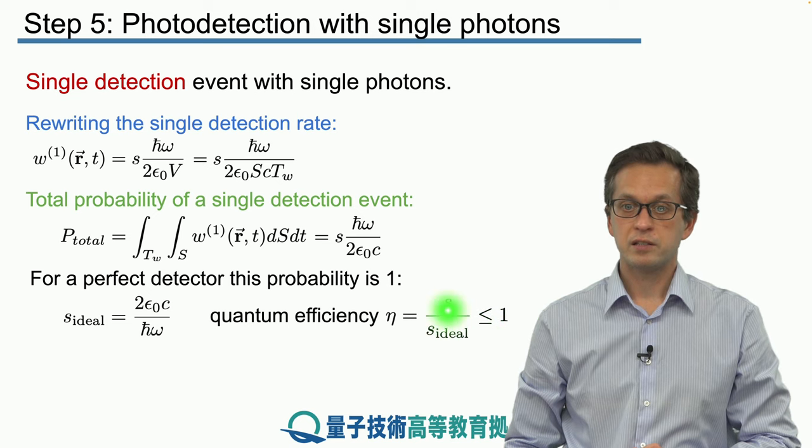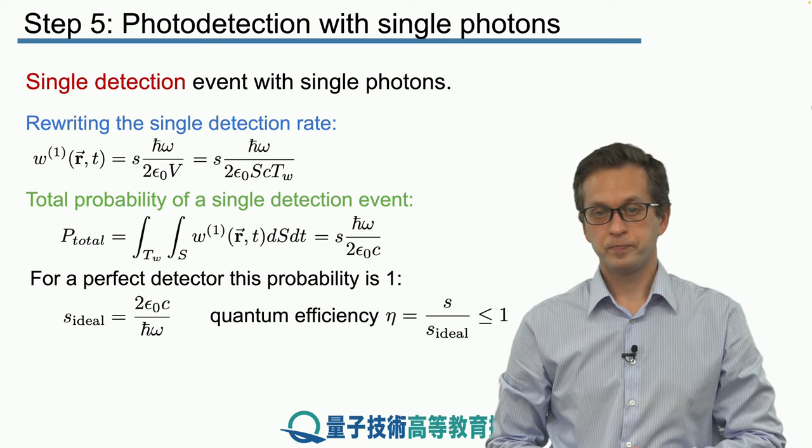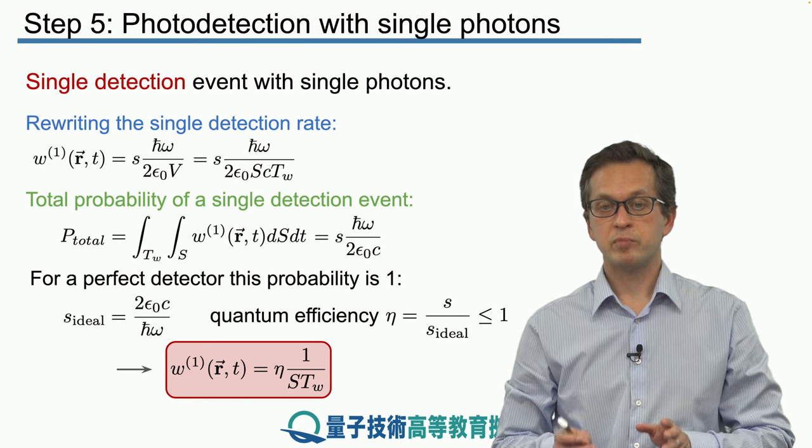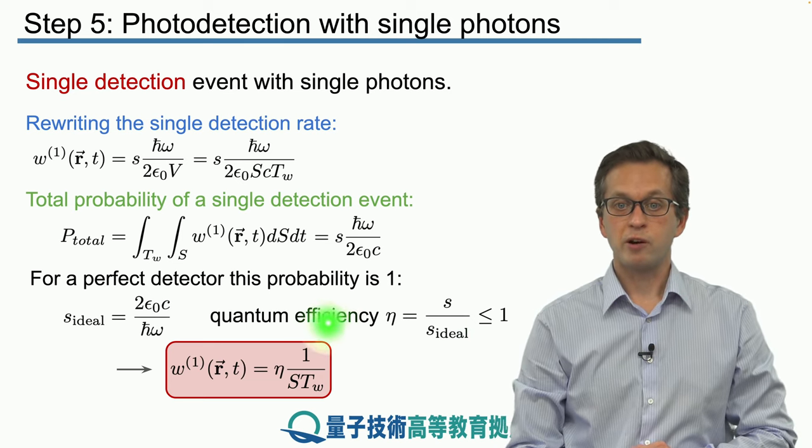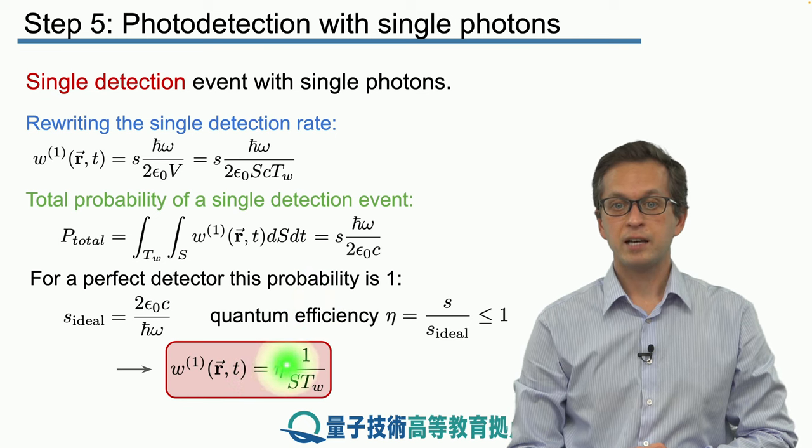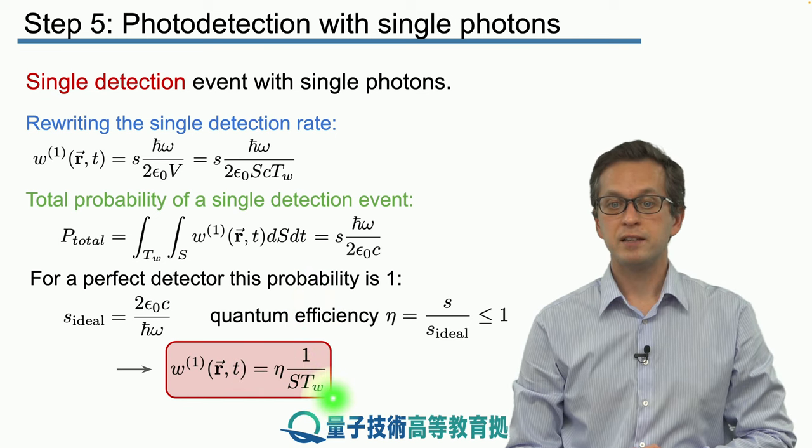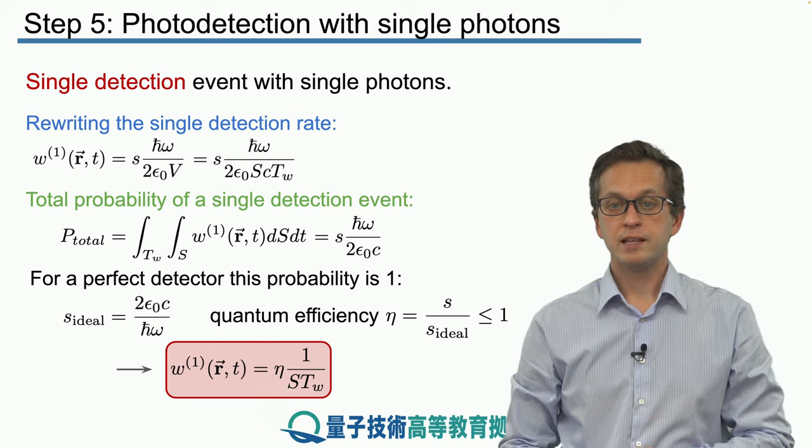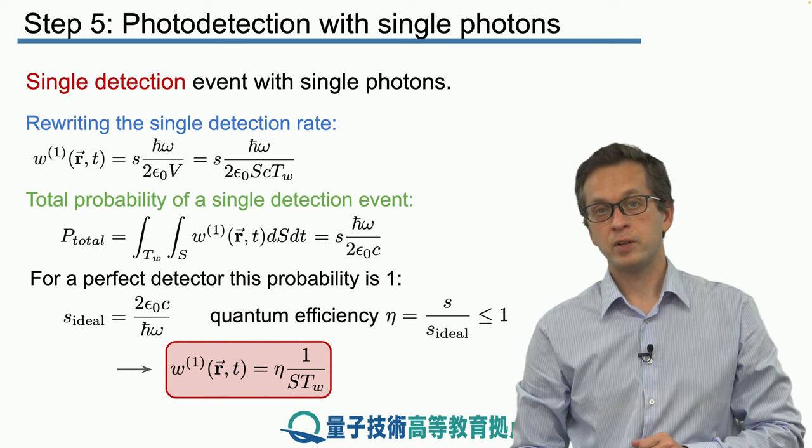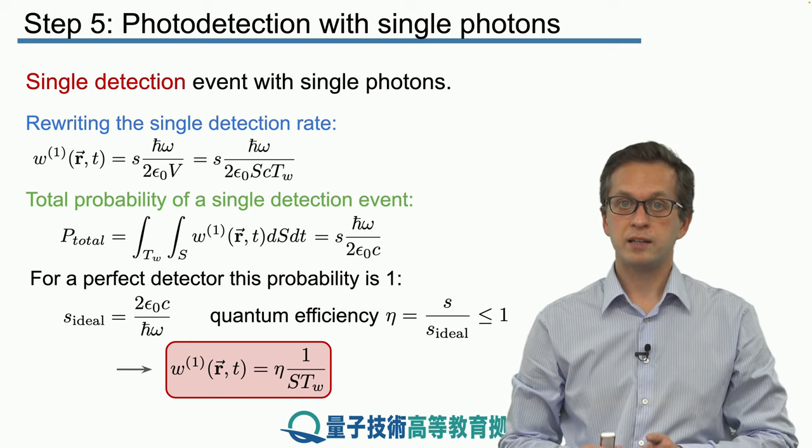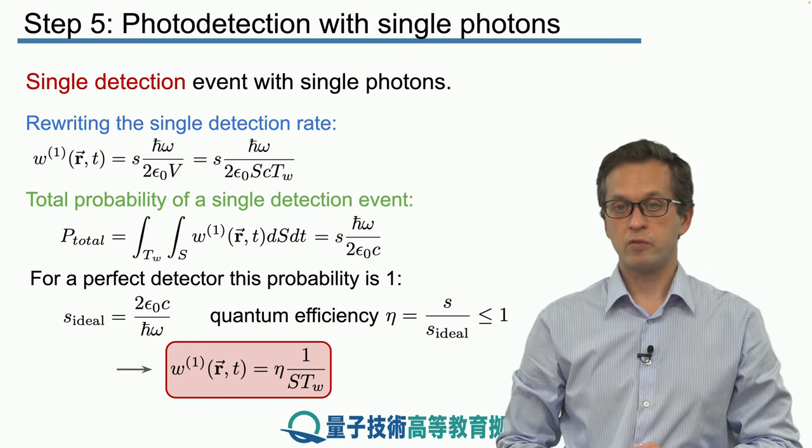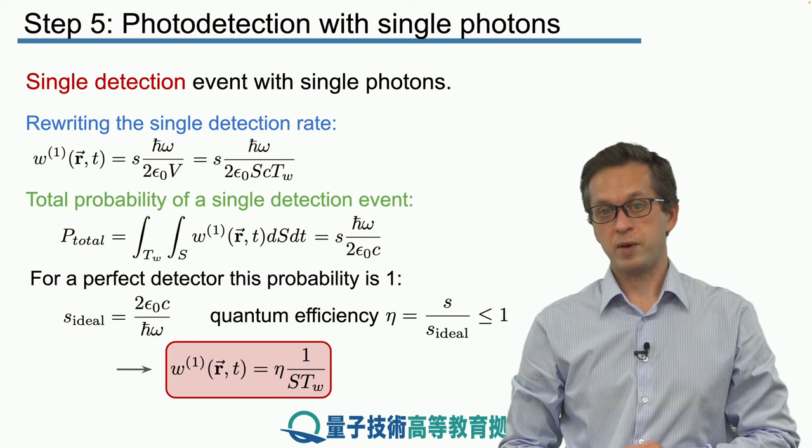So now we can write down a very simple expression for w1, which is just our quantum efficiency η times 1 over s×tw, where I remind you s is the width of the beam of light and tw is the extension, the duration of our single photon wave packet.